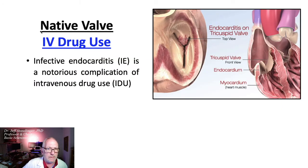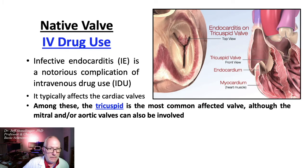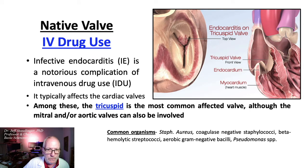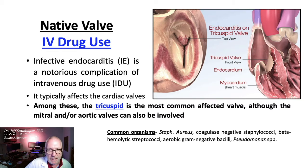One of the more common causes of native valve infection is IV drug use. It typically affects the cardiac valves. Among these, the tricuspid is the most common affected valve, although the mitral and aortic valves can also be involved. Common organisms include Staphylococcus aureus, coagulase-negative staphylococci, beta-hemolytic streptococci, aerobic gram-negative bacilli, and Pseudomonas species.